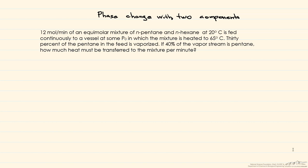So we know that 30% of the pentane in the feed is vaporized and 40% of the vapor stream is pentane, and now we want to know how much heat must be transferred to the mixture per minute.